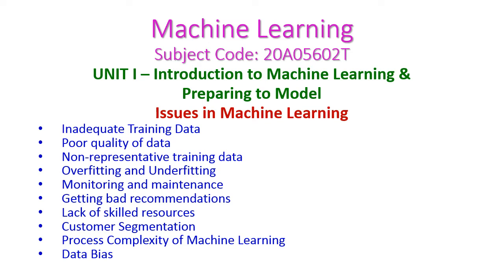In today's machine learning class, we will see the issues in machine learning from the first unit. Some of the issues are inadequate training data, poor quality of data, non-representative training data, overfitting and underfitting, monitoring and maintenance, getting bad recommendations, lack of skilled resources, customer segmentation, process complexity of machine learning, and data bias. We will see all those things one by one in today's class.